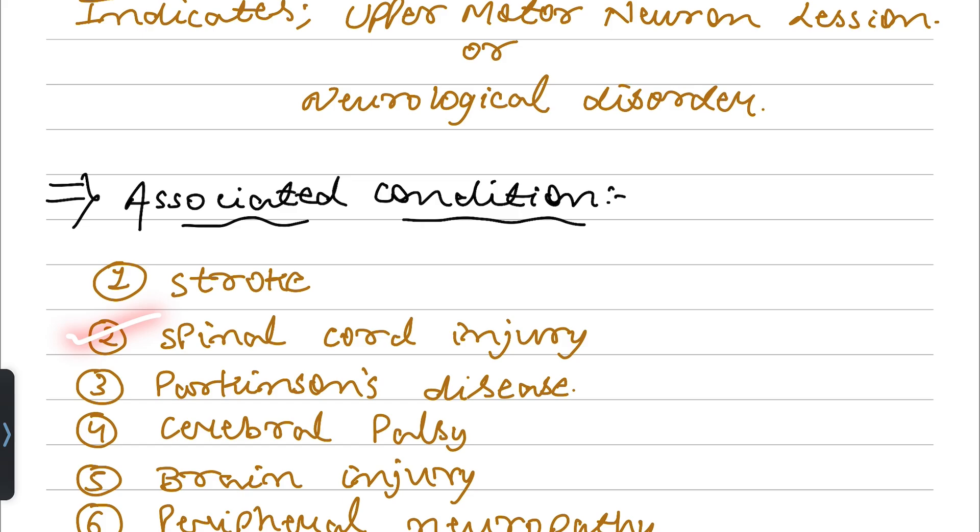Spinal cord injury, Parkinson's disease, cerebral palsy, brain injury, peripheral neuropathy. Peripheral neuropathy is mainly diabetic case.